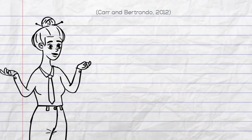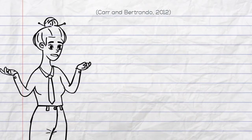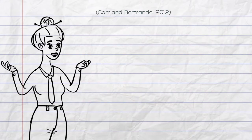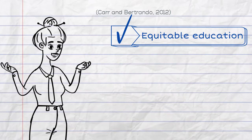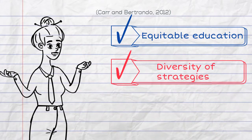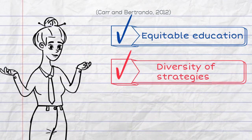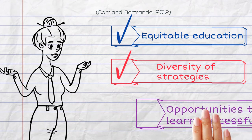An inclusive classroom doesn't provide an equal education experience for all students. It provides an equitable education for all of them. This means using a diversity of strategies for a diversity of students, so everyone has the opportunity to learn successfully.